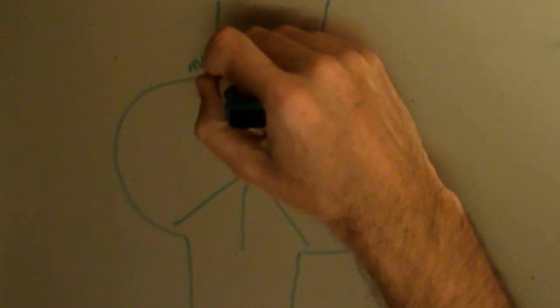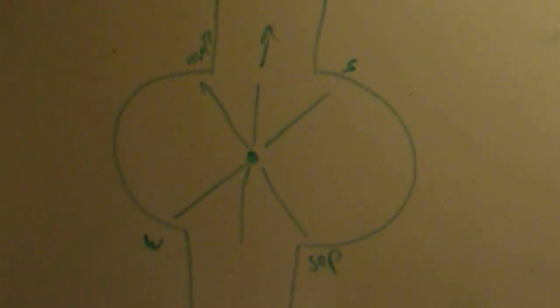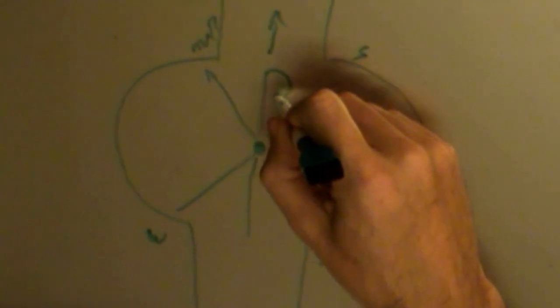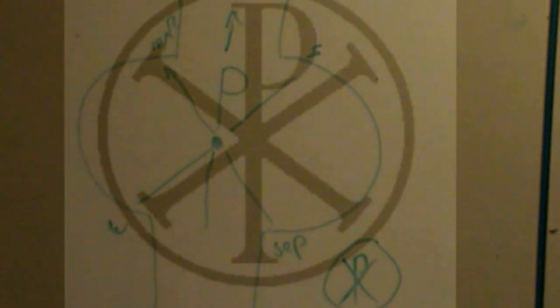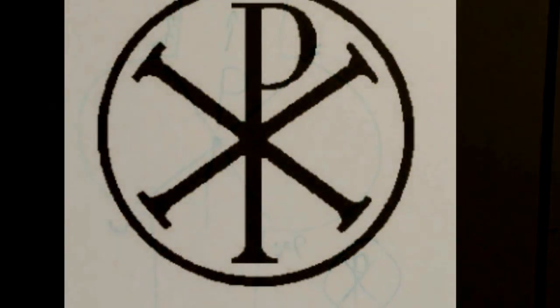And this is actually a representation of the cross of Constantine, which is also called the Chi-Rho. So it looks like this. The cross of Constantine is this P and this X. So it looks like this. And you'll see it in all kinds of Roman movies. It's on the shields in Gladiator and Ben-Hur and all these other movies.